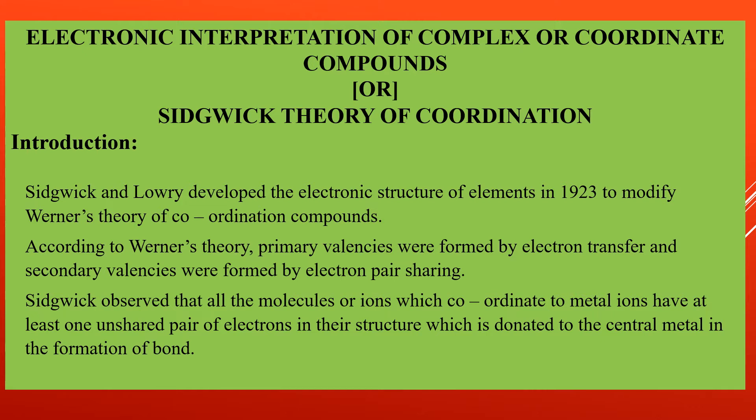This theory was proposed by Sidgwick and Lowry in order to modify Werner's theory of coordination compounds. In the previous classes we learned Werner's theory — kindly watch that video to review those points. Sidgwick and Lowry developed the electronic structure of elements in the year 1923 so as to modify Werner's theory of coordination compounds.